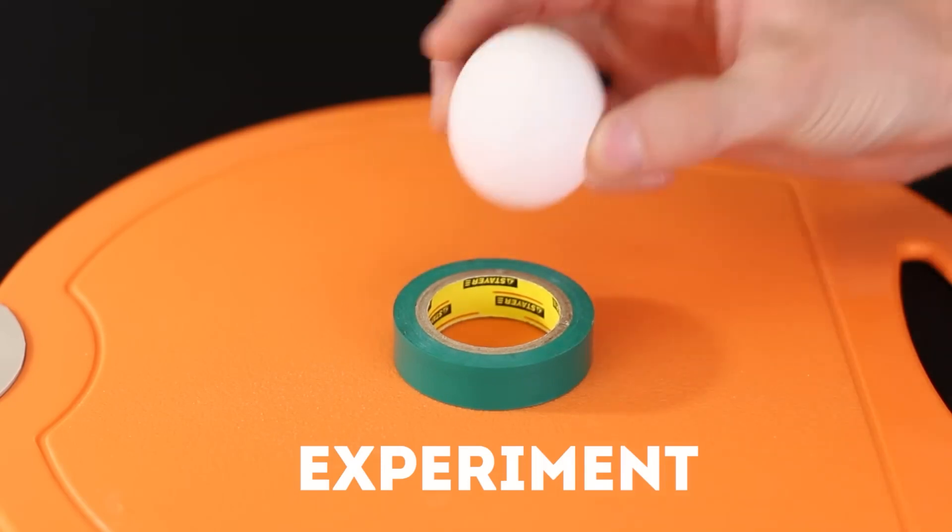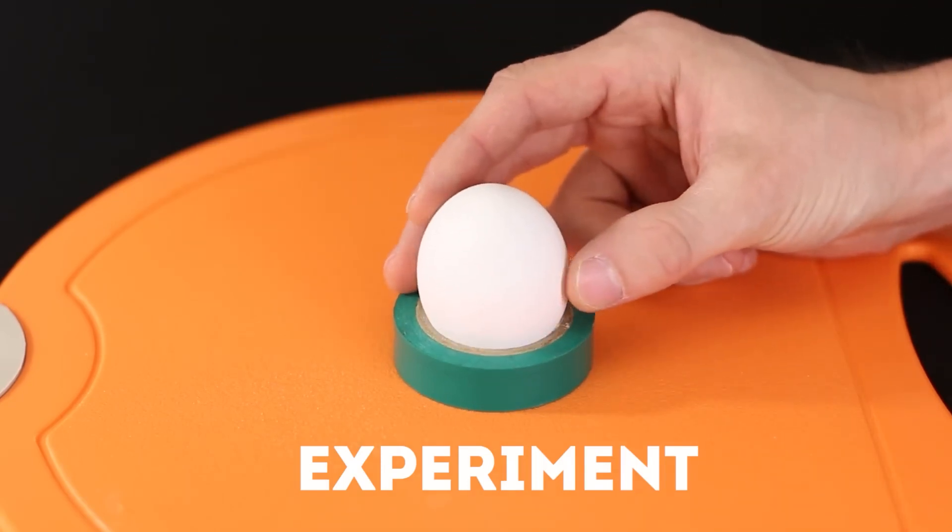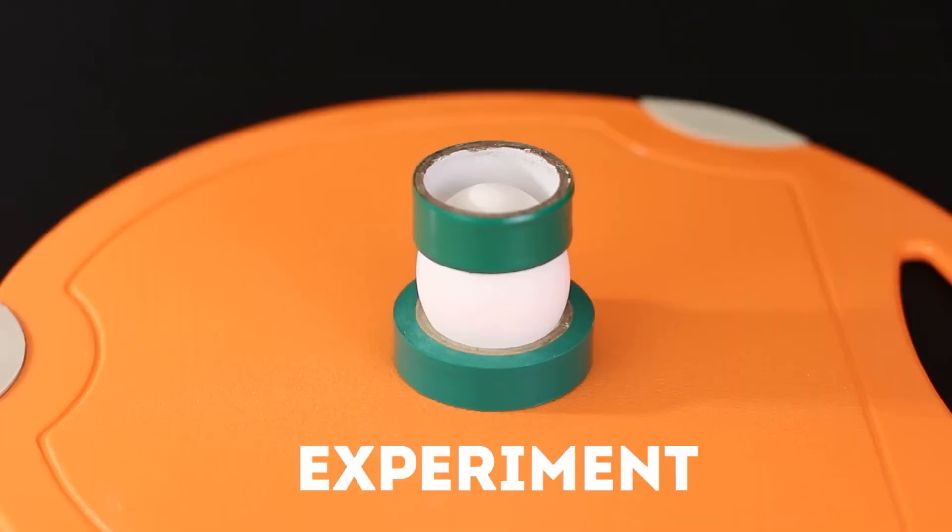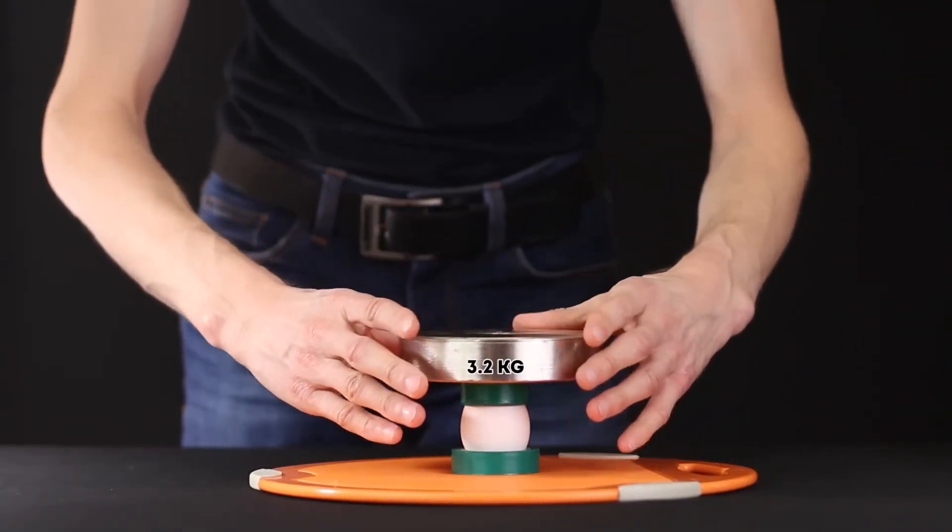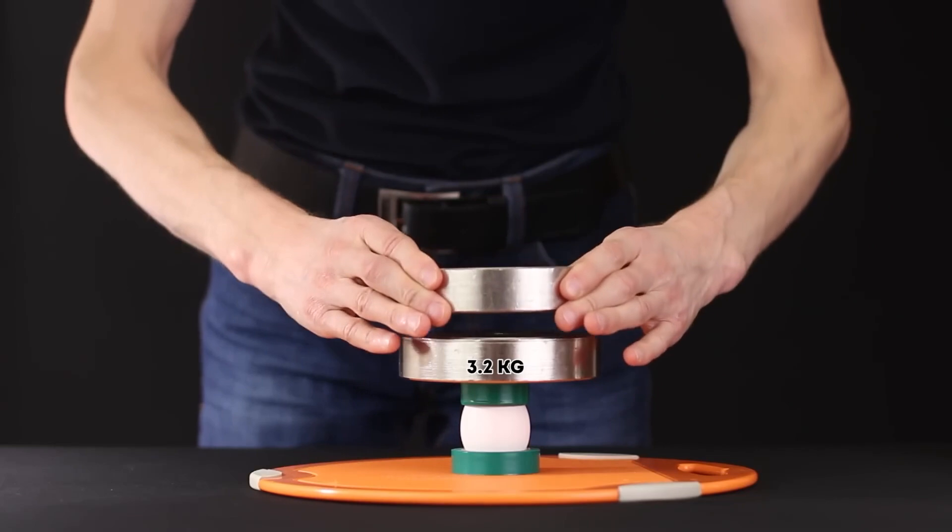Well, at the end, we will conduct the small crash test of an ordinary chicken egg. We will fix the egg on two coils of duct tape and gradually put barbells weighing 3.2 kilograms on top. Let's see how much of that it can withstand.